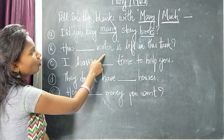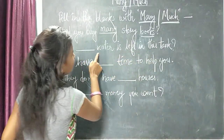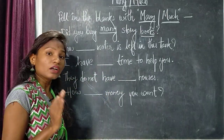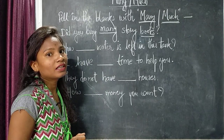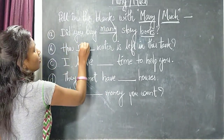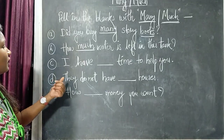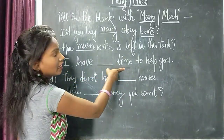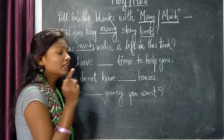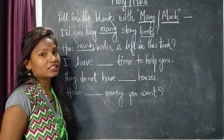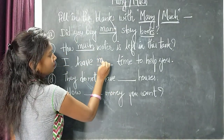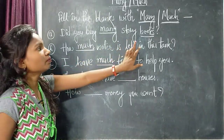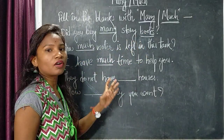Second sentence: 'How ___ water is left in this tank?' Water does not have S or ES — it is an uncountable noun, so we use much. Third sentence: 'I have ___ time to help you.' Time also does not have S or ES — it is an uncountable noun, so we use much.